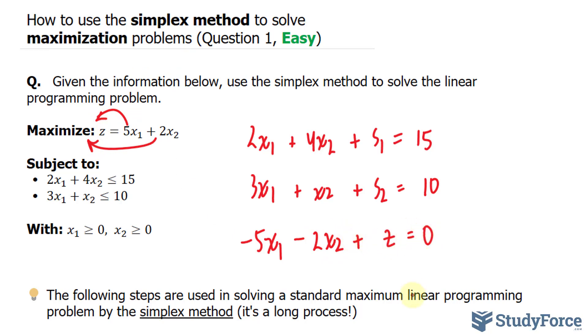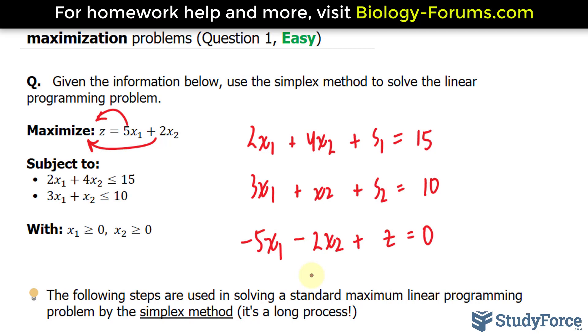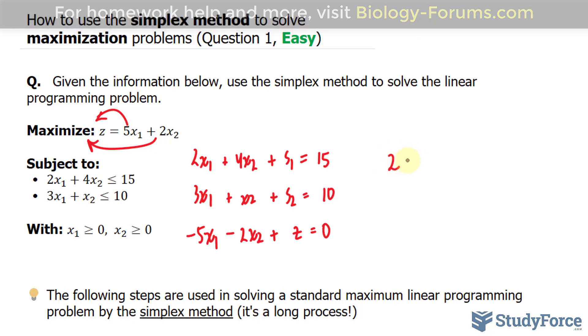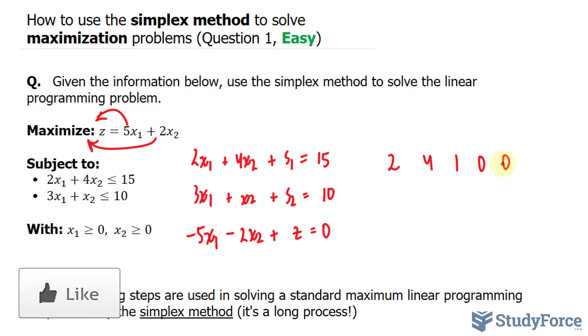At this point, you want to convert these equations into an augmented matrix. By that, you will rewrite this so that each variable is aligned with the one in the other equation, forming a matrix known as the initial simplex tableau. This part right here becomes 2, 4, the coefficient of s sub 1 is 1. You don't have an s sub 2 here, nor do you have a z. So, you'll write down 0 and 0. Don't forget the 15.